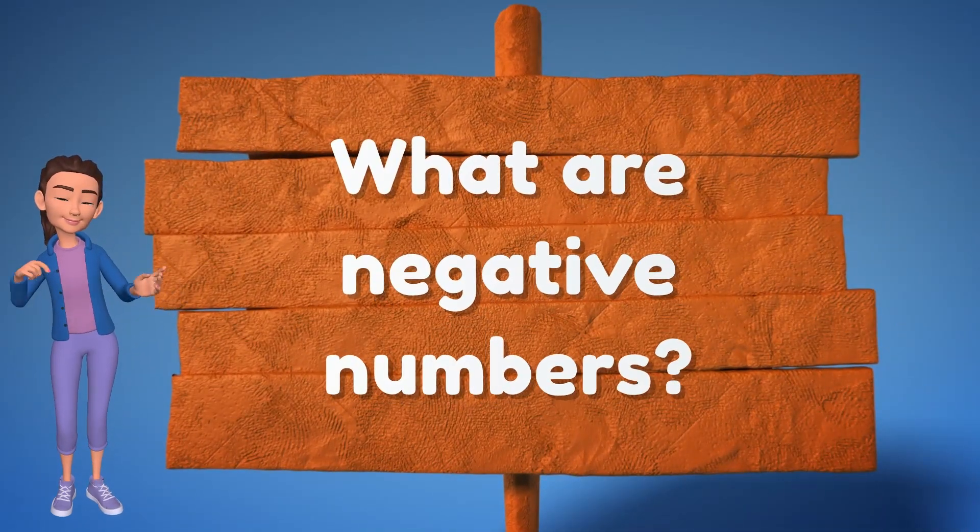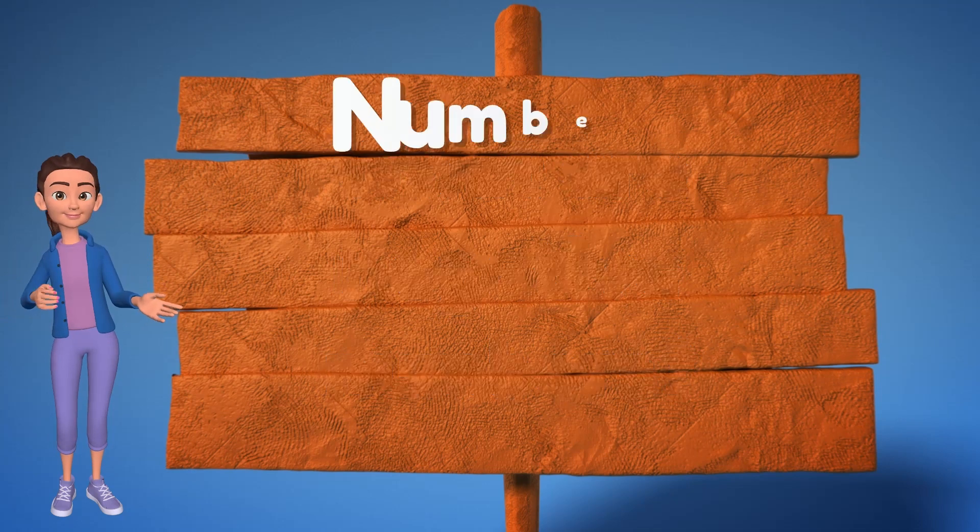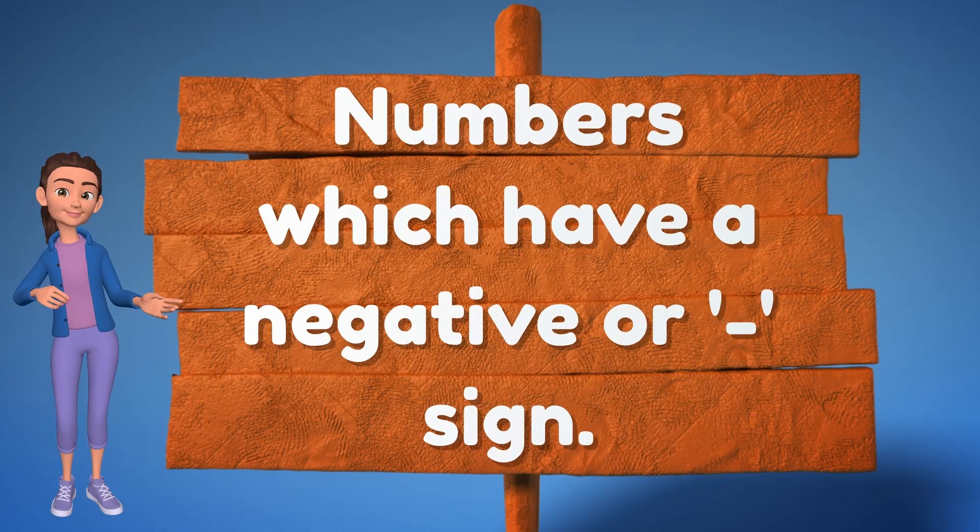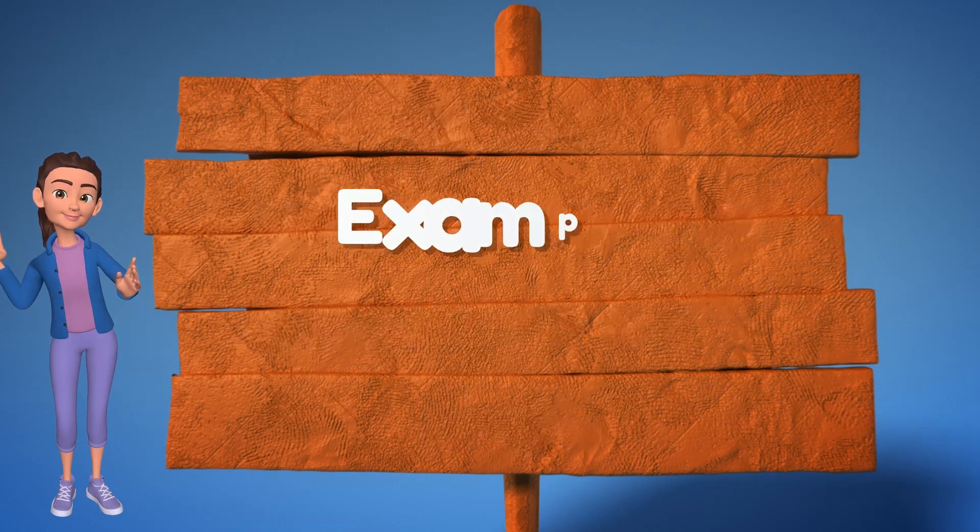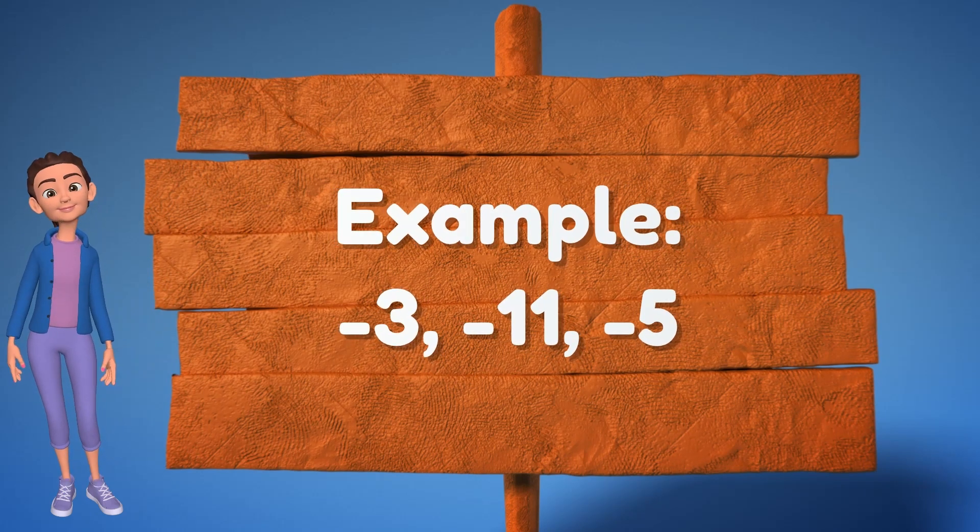When we say that a number is negative, it simply means that there is a negative sign in front of the number. Example: negative 3, negative 11, negative 5, and so on.